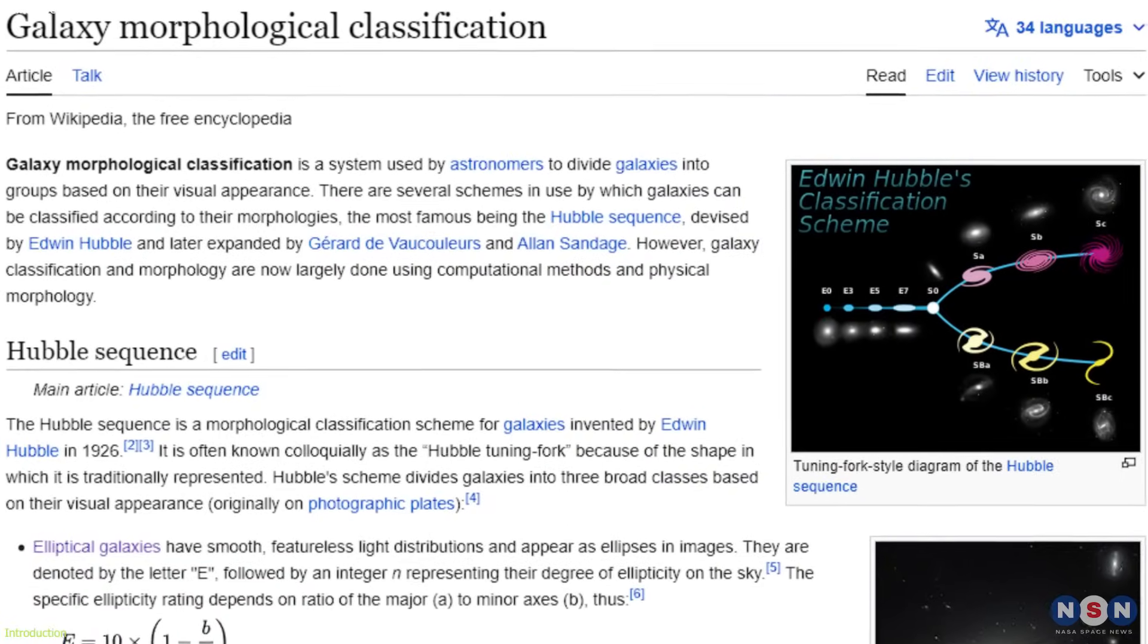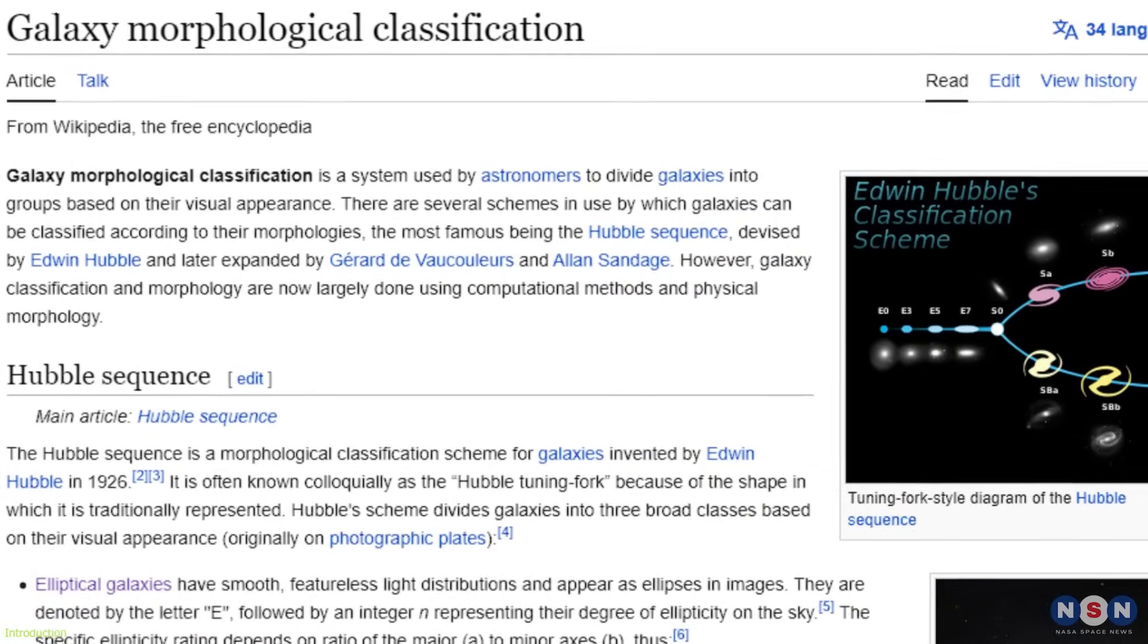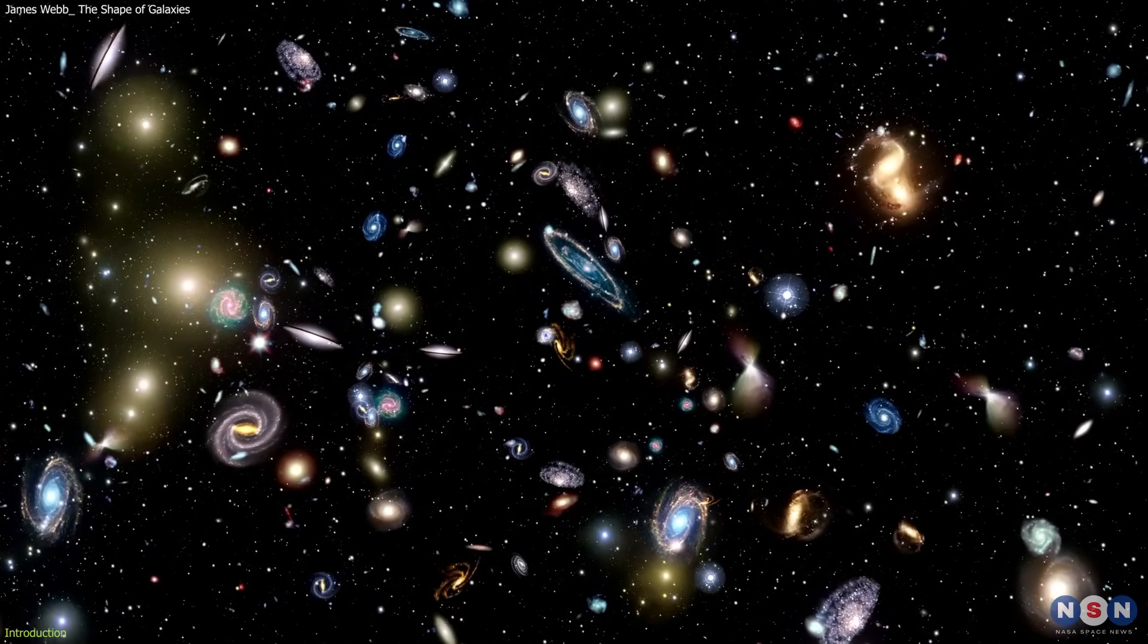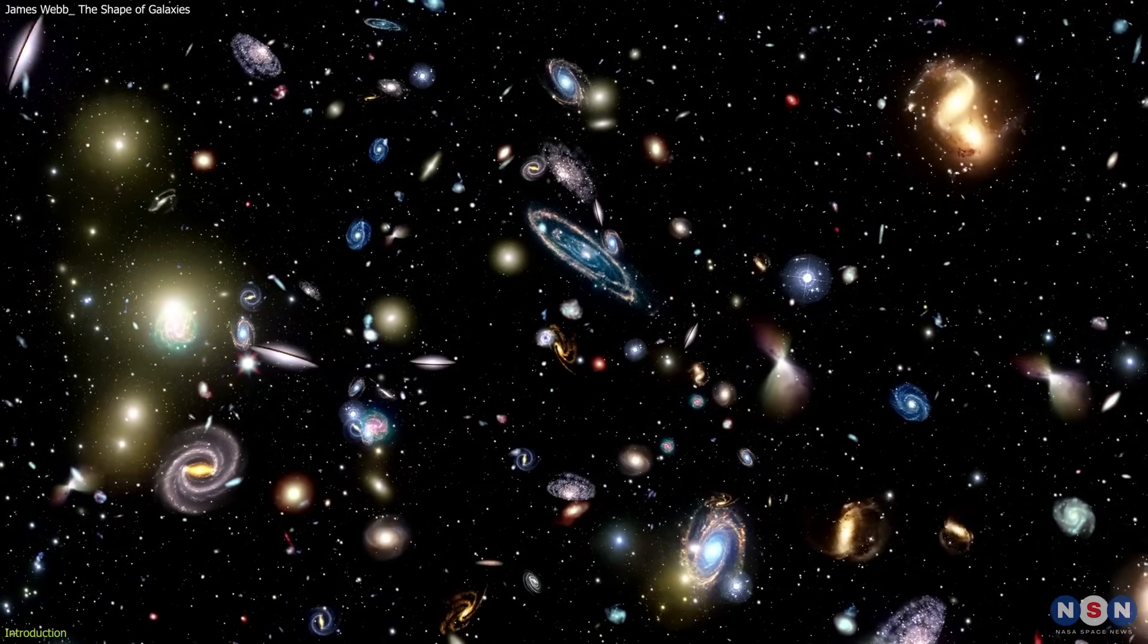Morphology is the scientific term for the shape and structure of something. By looking at the morphology of galaxies, we can learn a lot about their properties, such as their mass, age, and composition.